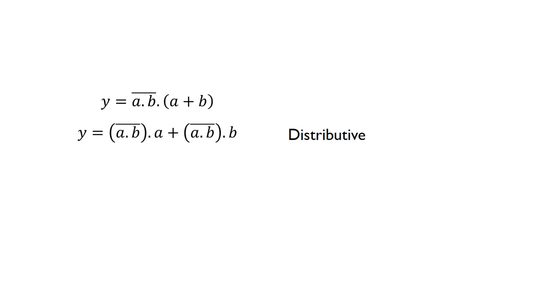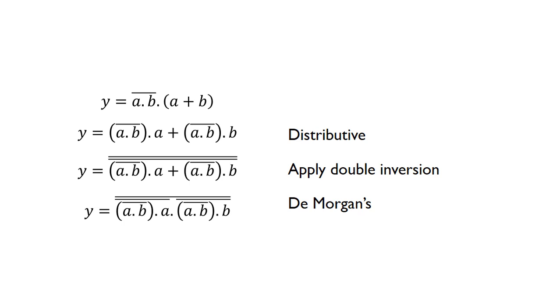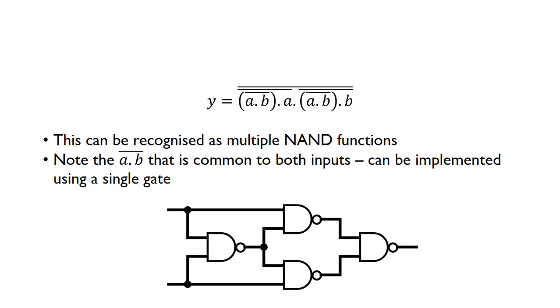So we end up with this expression. And again, using the distributive law, we're multiplying out that bracket. Apply double inversion to the entire expression, and then use De Morgan's again. We're breaking that line here, changing that to an AND, and then get left with this. That looks very complicated, but if you start looking at it, you'll see that there's lots of NAND functions here.